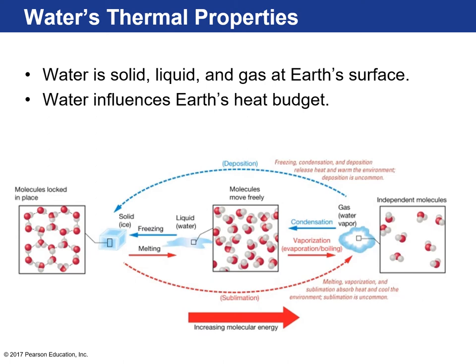Water has very unique thermal properties. On Earth's surface, you can find water as a solid, liquid, and gas, and that influences how heat travels throughout the Earth. Water has a unique property of distributing heat as it goes through phase changes.